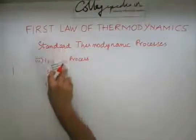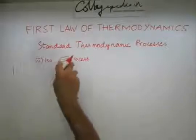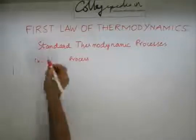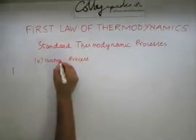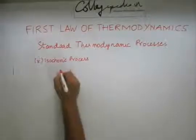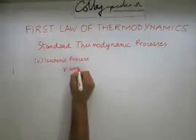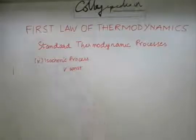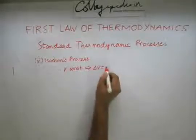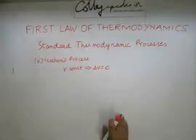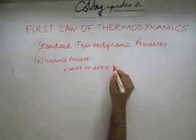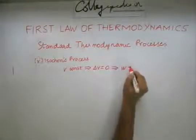Next we will be looking at an isochoric process. An isochoric process, as the name implies, is a process where the volume remains constant. This implies that delta V is zero. If delta V is zero and we are considering PV work only, we can say that the work done is zero.